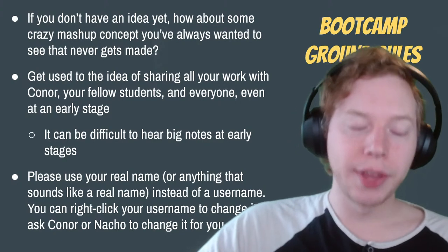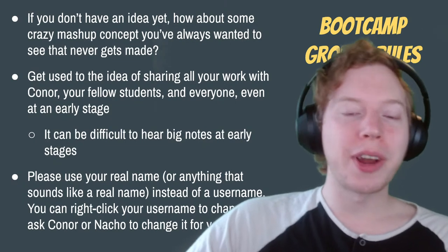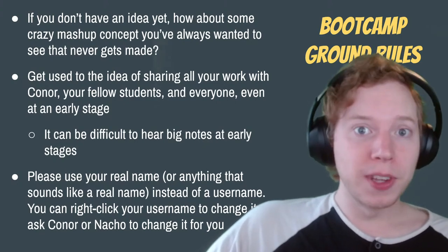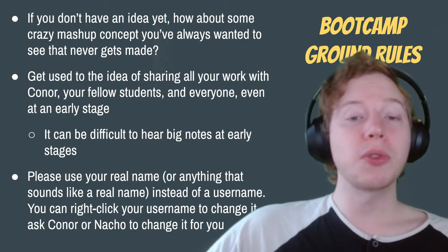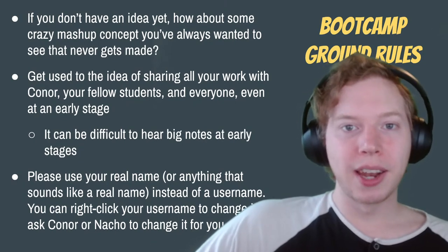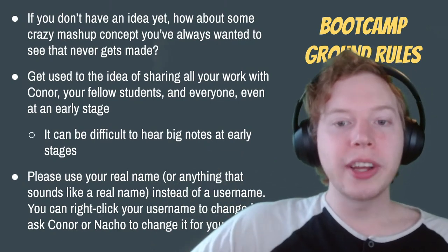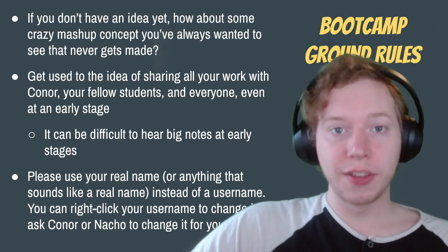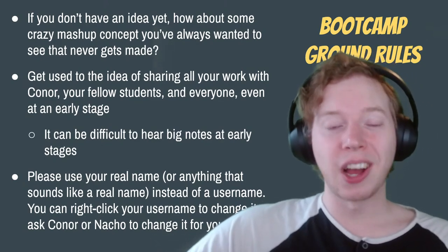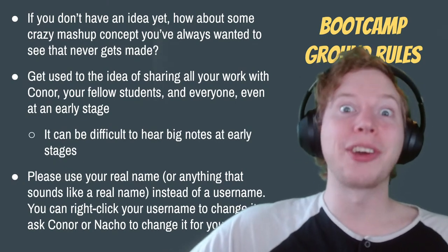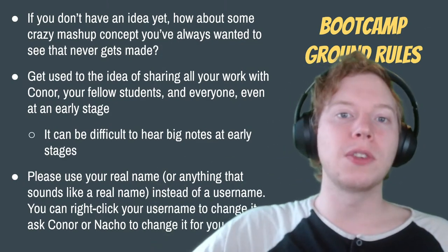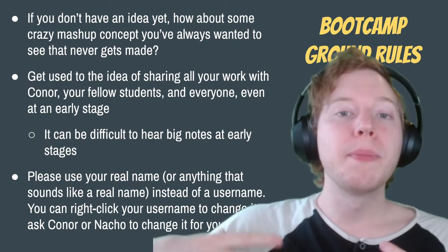A couple of ground rules before we start. If you don't have an idea yet, just pick something weird and different that you've always wanted to see — maybe a combination of two favorite genres that never go together, like a Hallmark zombie movie. Just pick something, put two things together you haven't seen together before. We're just trying to pick something that gets you excited and able to finish in the eight-week span. Don't worry about making this a masterpiece. Get used to sharing your ideas and work with me and the other students at all stages, even very early stages.